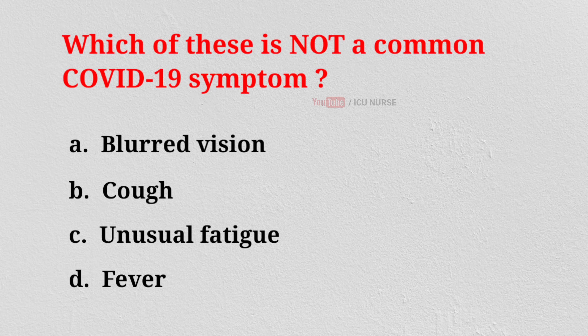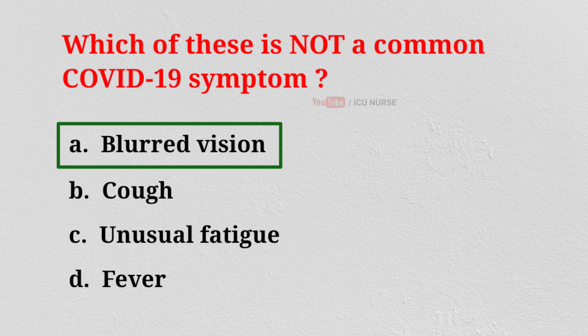Which of these is not a common COVID-19 symptom? A. Blurred Vision. B. Cough. C. Unusual Fatigue. D. Fever. And the correct answer is A: Blurred Vision.